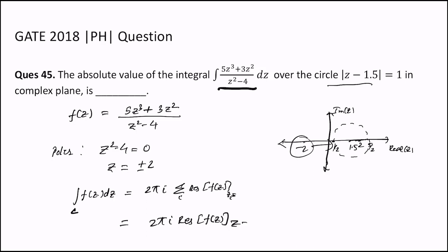Which we can write as 2πi times limit as z tends to 2 of (z - 2) times (5z³ + 3z²)/[(z - 2)(z + 2)].